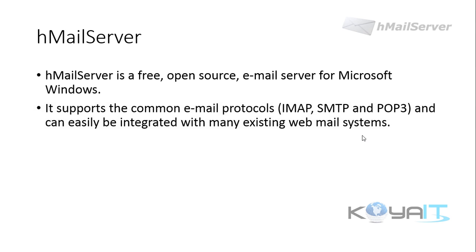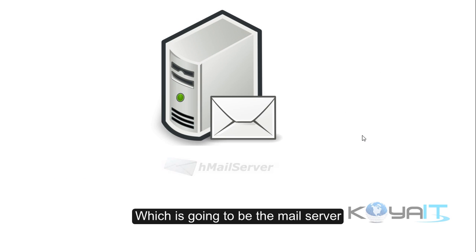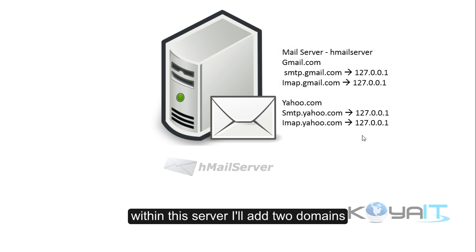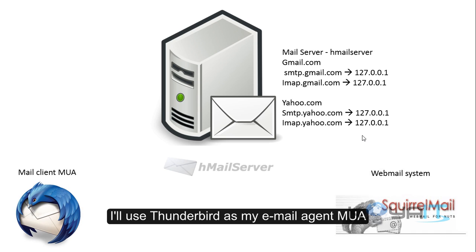HML Server is a free open-source email server for Microsoft Windows. It supports the common email protocols IMAP, SMTP, and POP3, and can easily be integrated with many existing webmail systems that support IMAP and SMTP, such as Roundcube and Squirrelmail. For this practical, I'll use one server as the mail server and install HML Server within it, adding two domains — gmail.com and yahoo.com. I'll use the hosts file to translate server names to IP addresses and Thunderbird as my email agent.